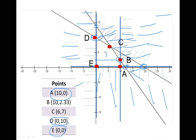For point B, since we know x1 equals 10, we substitute into the equation of the line — the first constraint: 7x1 plus 6x2 equals 84. Substituting x1 equals 10 gives 70 plus 6x2 equals 84, so x2 equals 14 divided by 6, which equals 2.33. So point B is (10, 2.33). For point C, taking the two constraint equations simultaneously — 7x1 plus 6x2 equals 84 and 2x1 plus 4x2 equals 40 — and solving gives x1 equals 6 and x2 equals 7.